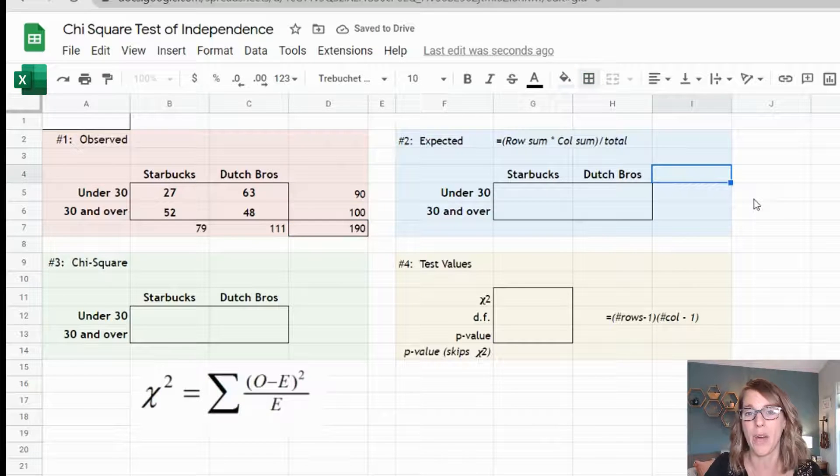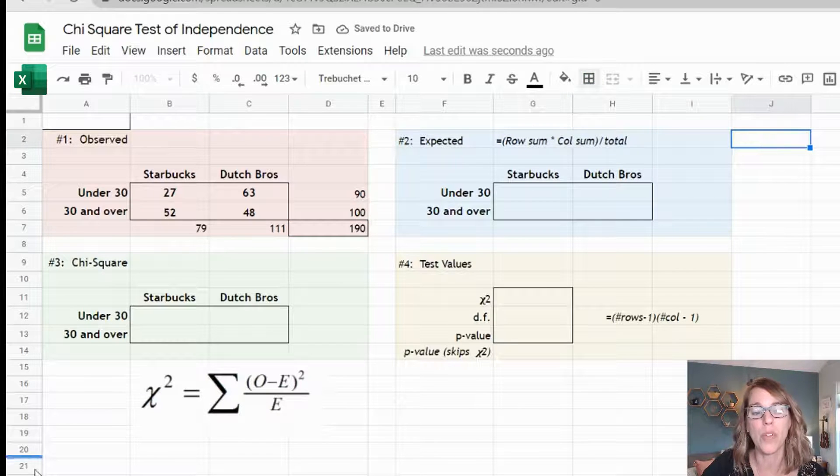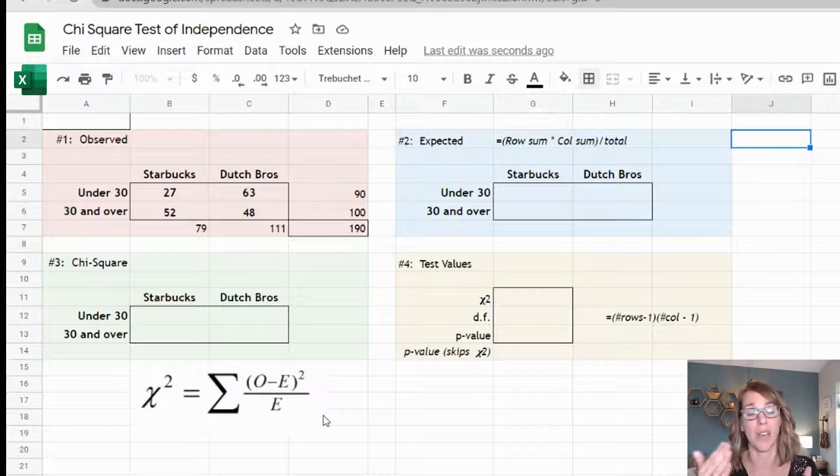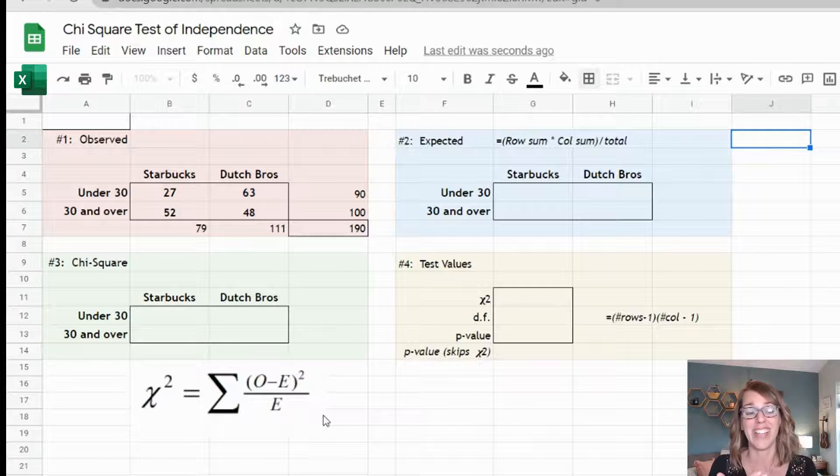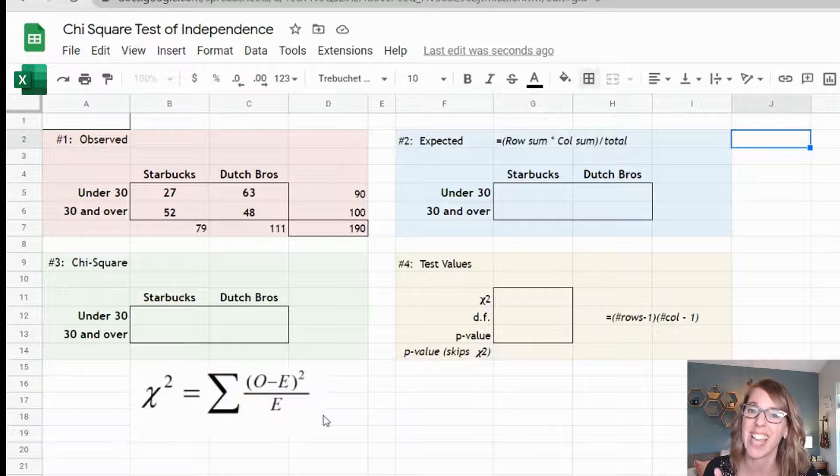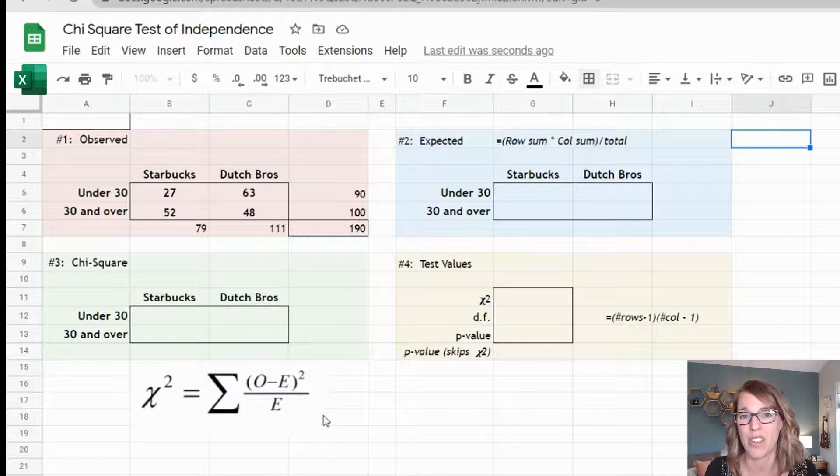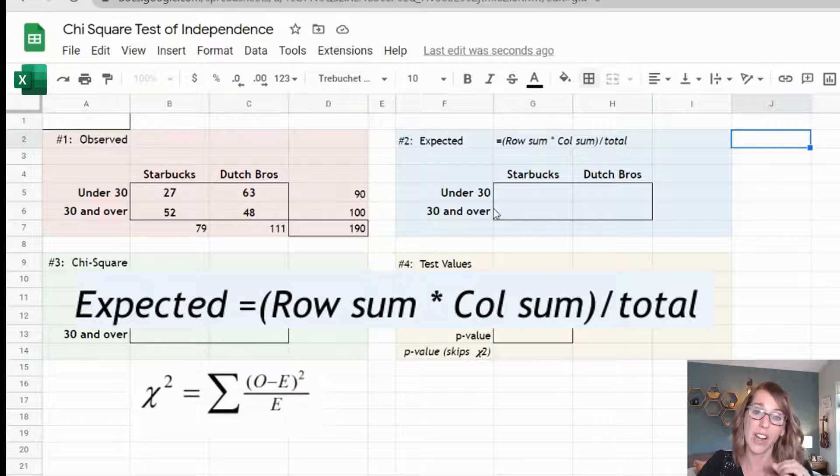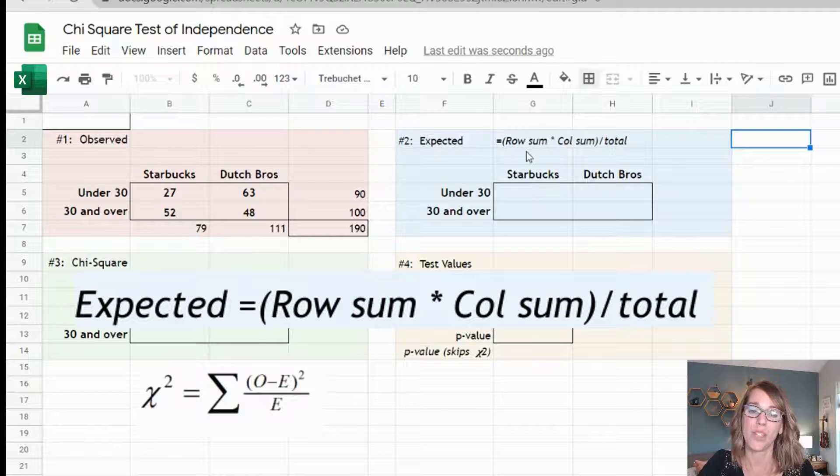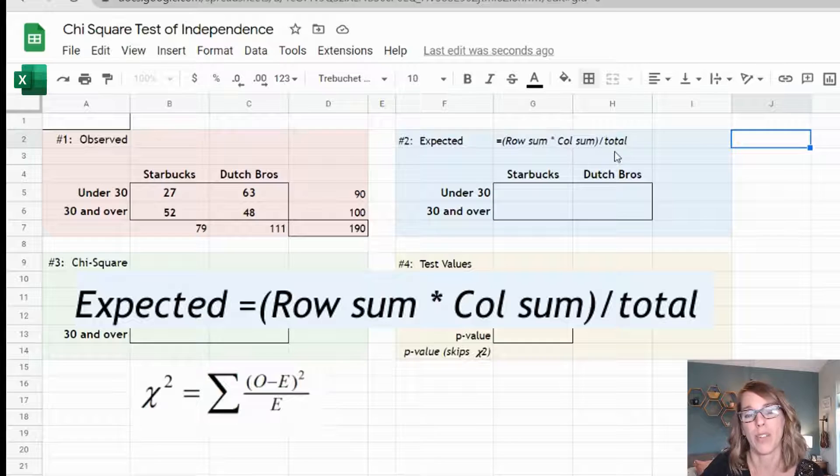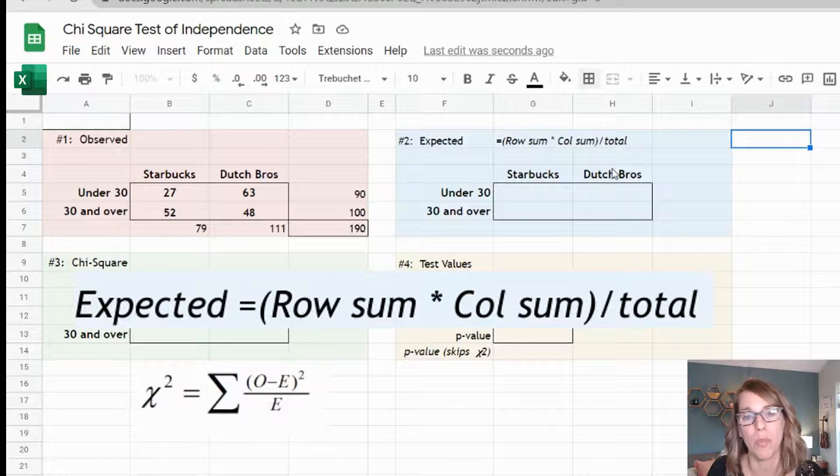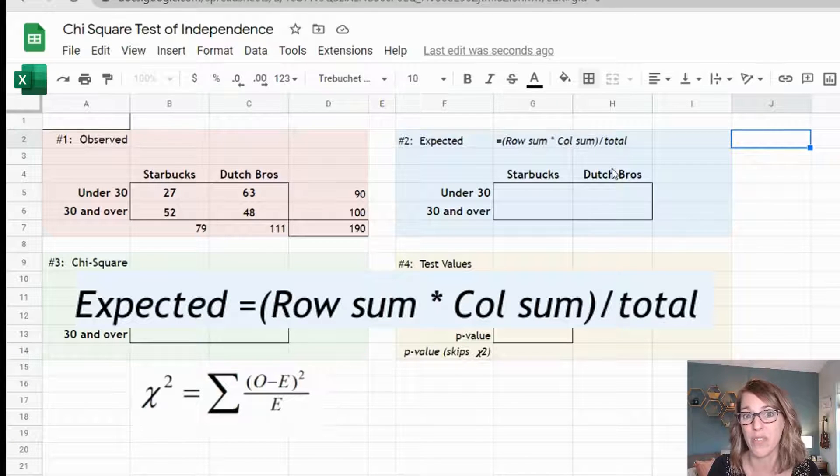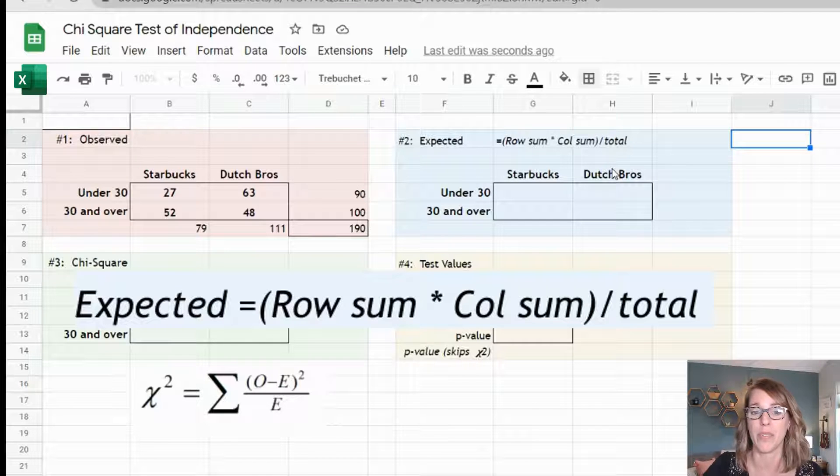Next we want to come up with our expected values. My goal is to compute the chi square measure which takes observed minus expected squared divided by expected, kind of like a percent change formula. In order to do this for a chi square table I need to do row sum times column sum divided by total. What I'm doing is using the overall proportion assuming there's no difference or no preference between my variables.